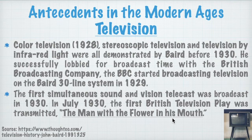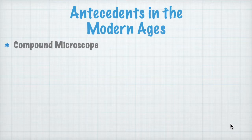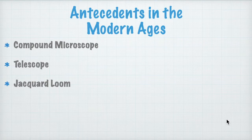That ends pretty much our antecedents in the modern ages. We've discussed only five of them out of the many hundreds or thousands of antecedents. To recall: we talked about the compound microscope; from it, the telescope was created by Galileo; we have the Jacquard Loom by Joseph Marie Jacquard; the airplane by the Wright brothers; and, of course, the television by Baird.